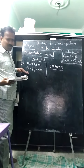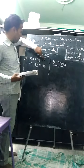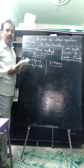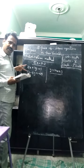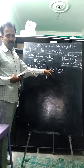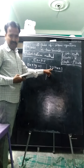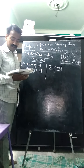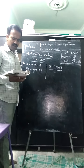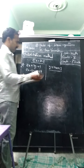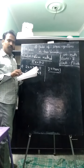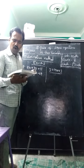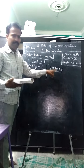Here we have a pair of linear equations in two variables: 2x plus 3y equals 11, and 2x minus 4y equals minus 24. The solution of these equations satisfies y equals mx plus 3 — find the value of m. You can verify this in the textbook, exercise 3.3, page number 53.